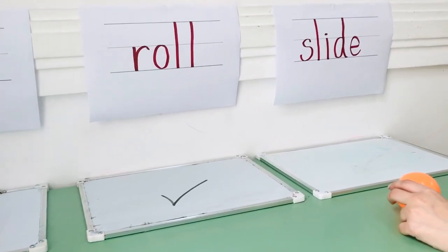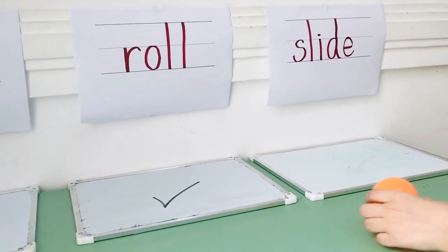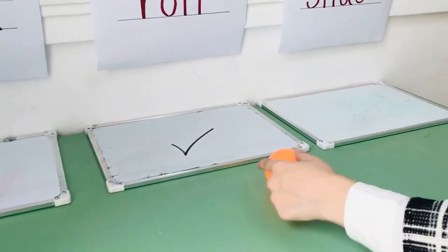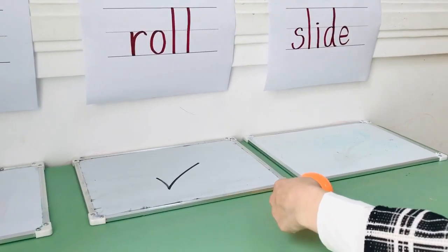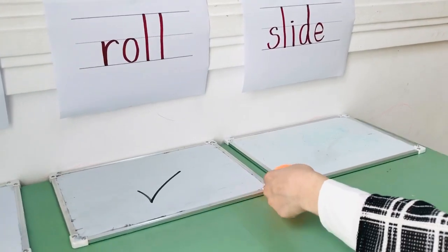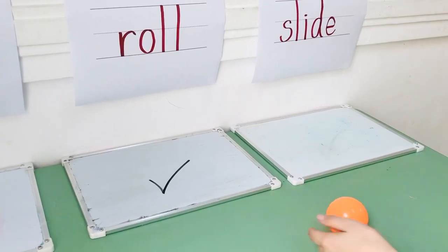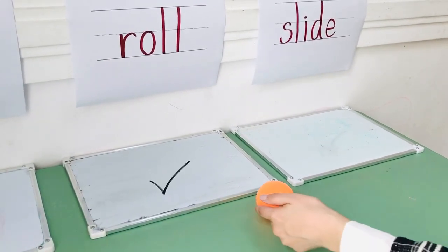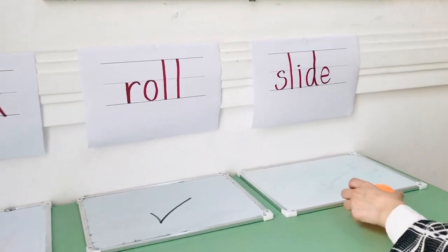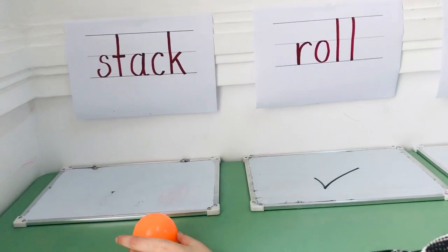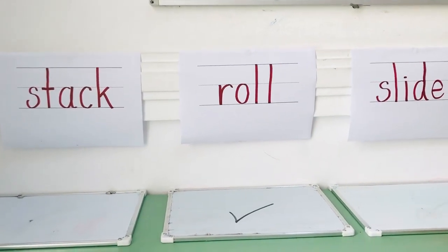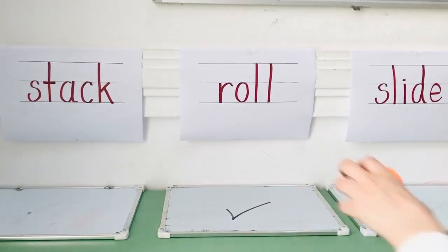What about slide? Sphere is a little bit tricky because it seems like it slides, but it does not slide — it rolls. It rolls slowly. So when you push it to see if it slides or not, it actually moves, but it's rolling, not sliding. So can the sphere slide? No. So does the sphere stack? No. Does the sphere roll? Yes. Does the sphere slide? No. So the sphere only rolls. Very good.